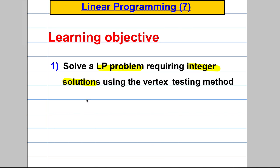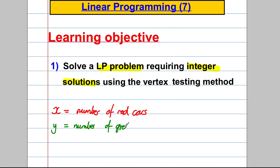Say there's some linear programming problem and X is the number of red cars you want to make and Y is the number of green cars you want to make. You want to maximise how many cars you make, which is equal to X plus Y. Clearly when you find the maximum answer it's got to be a whole number because you can't have 0.2 red cars. Some problems require integer solutions — it's obvious which ones they are because they involve things that can only be counted with integers.